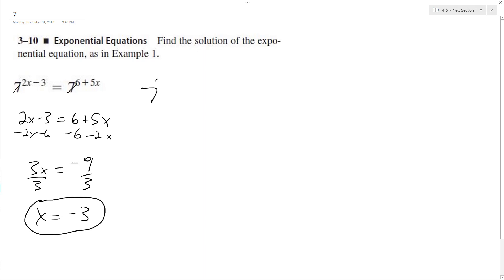So 7 raised to the 2 times negative 3 minus 3 equals 7 raised to the 6 plus 5 times negative 3. This is equal to 7 to the negative 6 minus 3, so negative 9, equals 6 minus 15, which is 7 raised to the negative 9. So x equals negative 3 is correct.